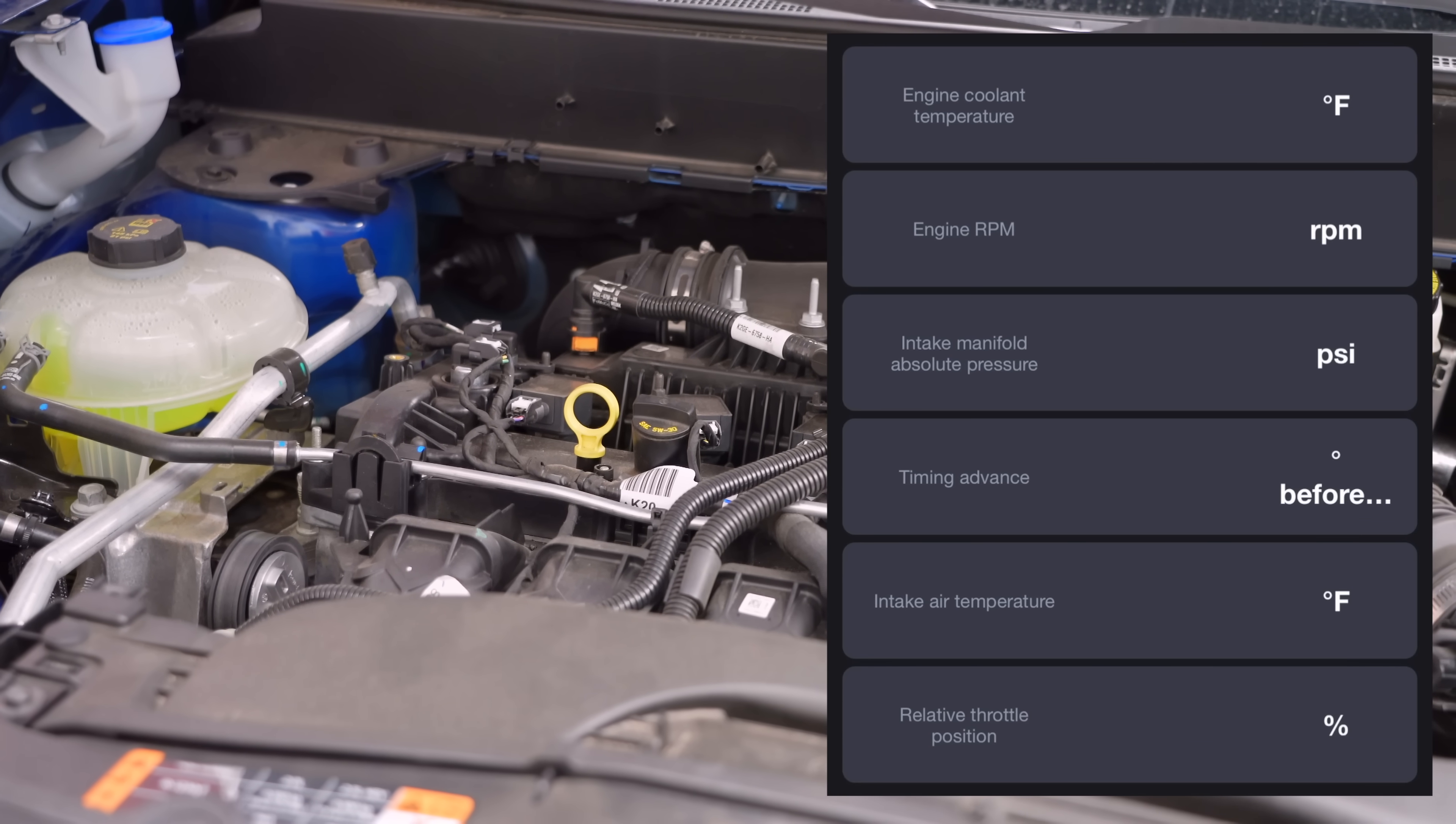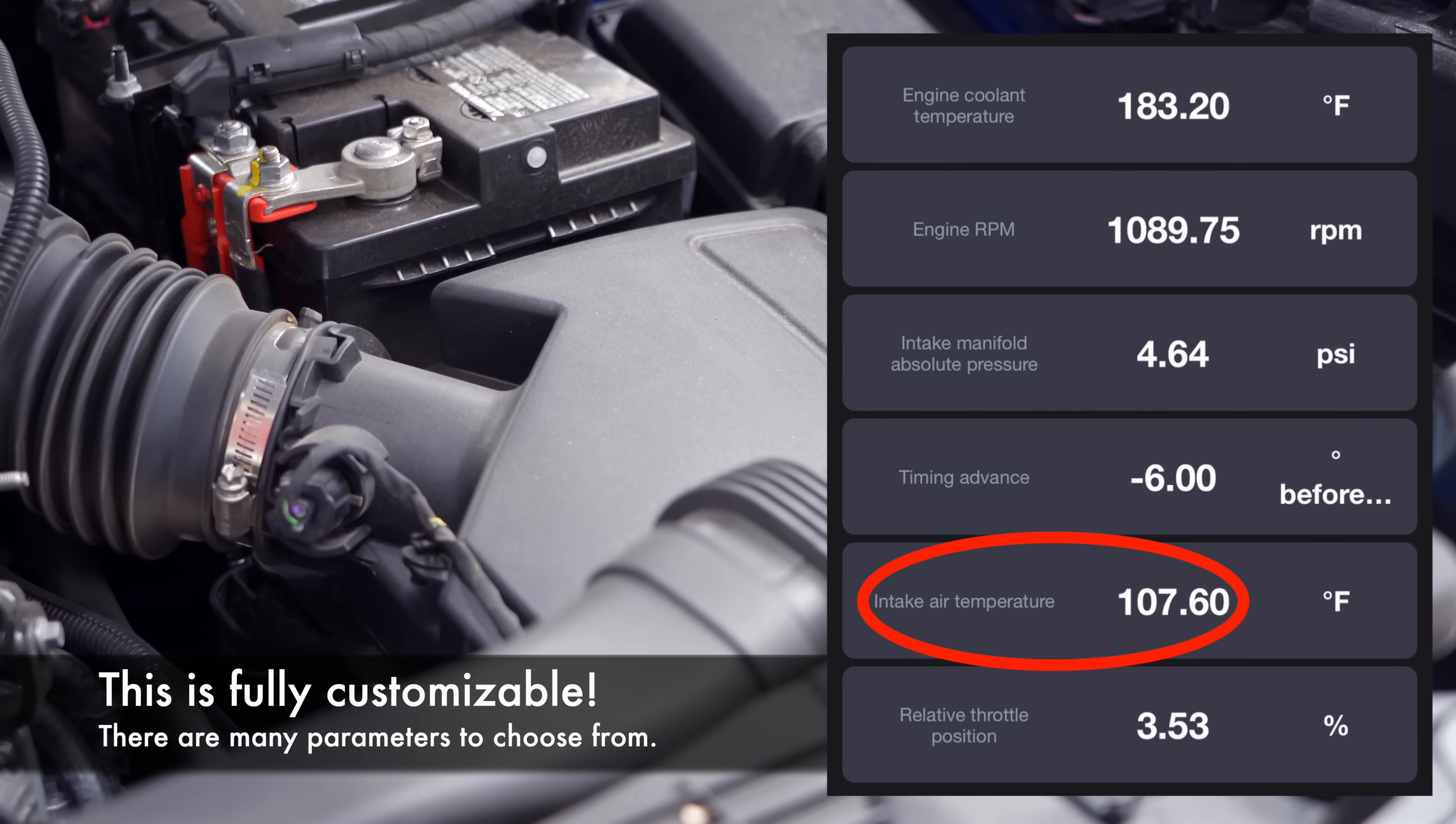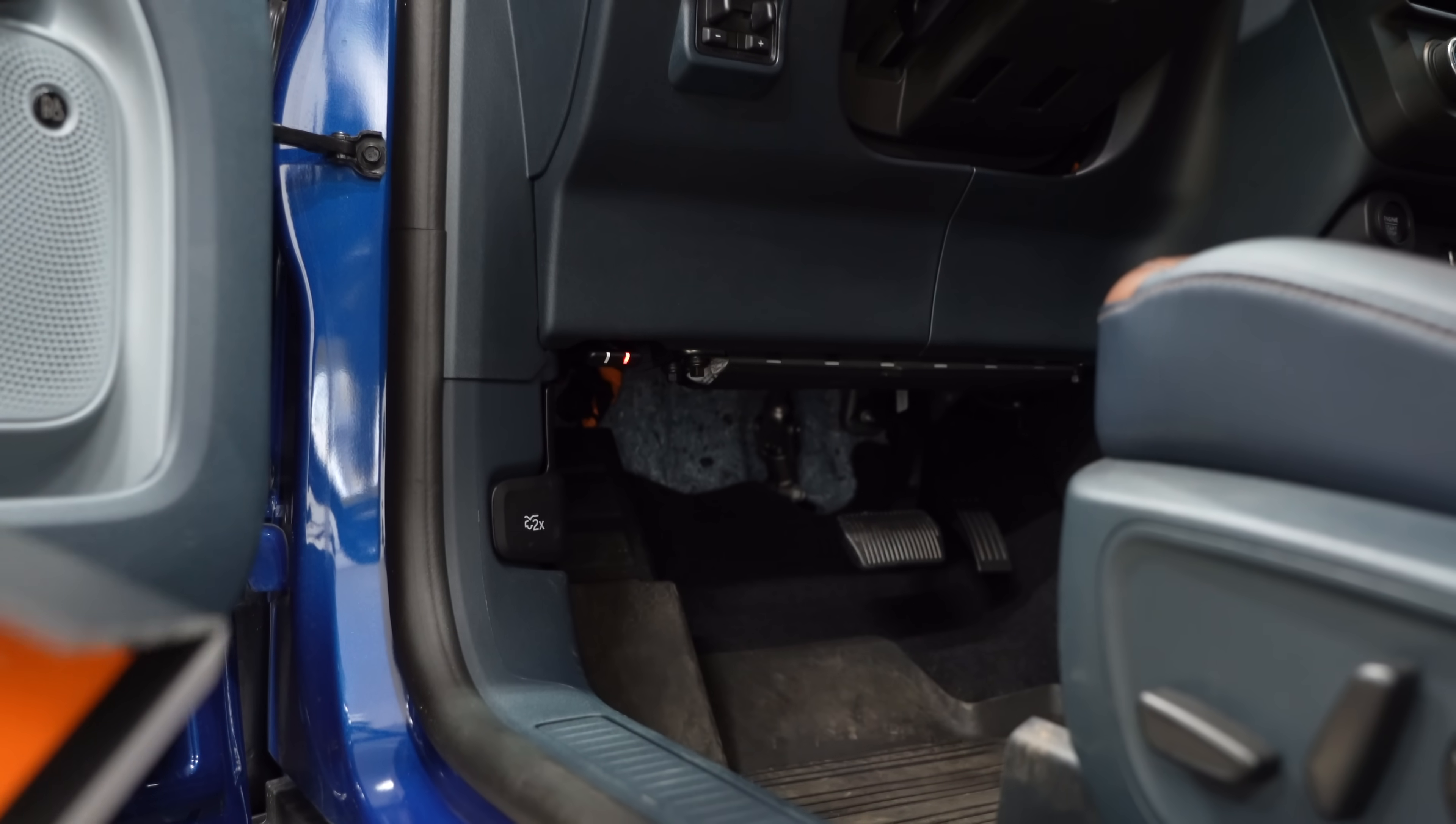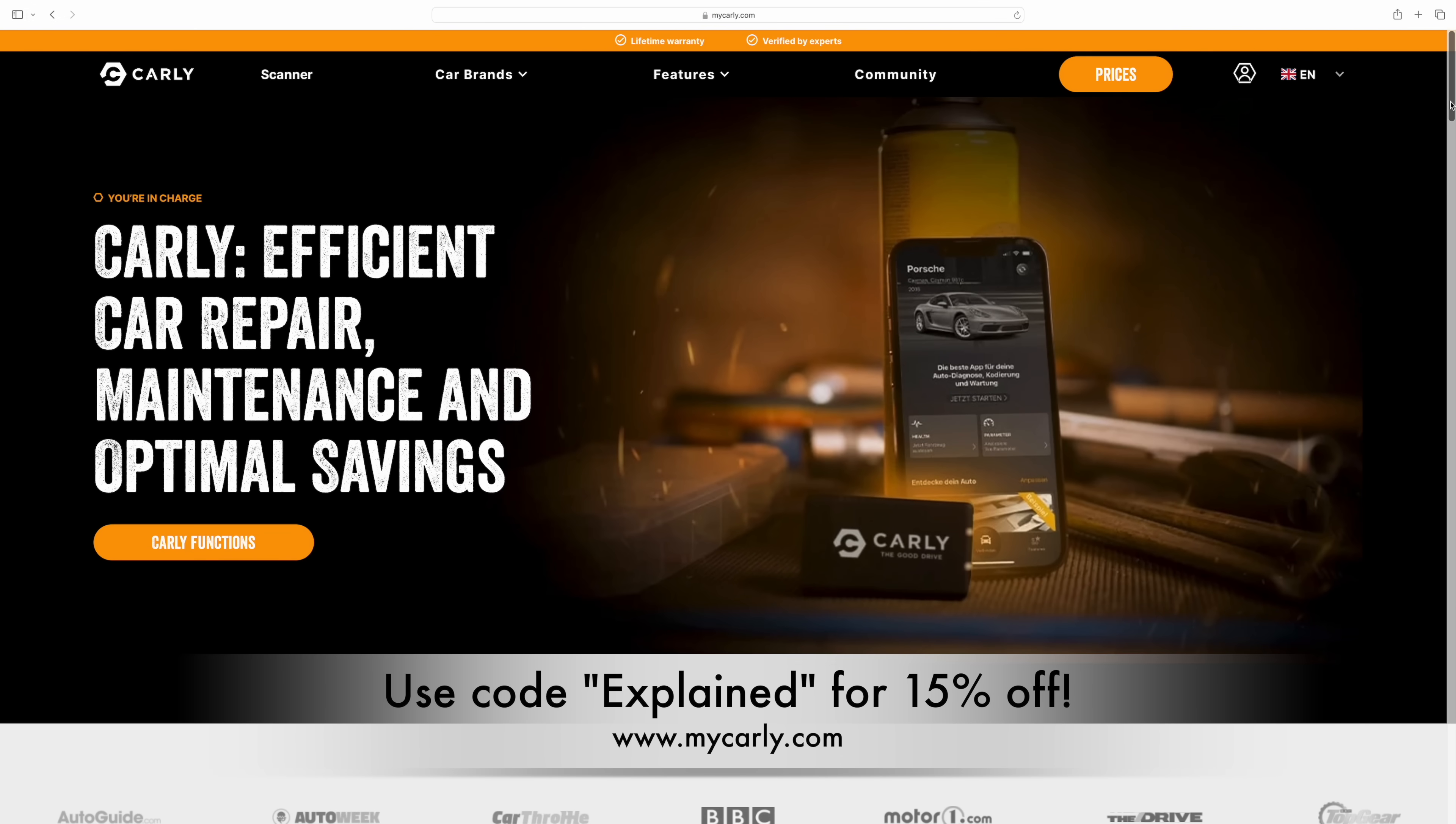Personally, I love the live data. Say you're towing and you want to monitor coolant temperature, you can keep a gauge up. Or perhaps you've modified your car and you want to monitor your manifold pressure or timing advance, you can also watch this live. Or you can monitor your intake temperatures and discover that your cold air intake is actually a hot air intake. And if you're just buying the scanner, it comes with a 14-day money-back guarantee so that you can check the functionality with your car before committing. You can find a link to the Carly scanner in the video description, and you can use the discount code 'explained' for 15% off.